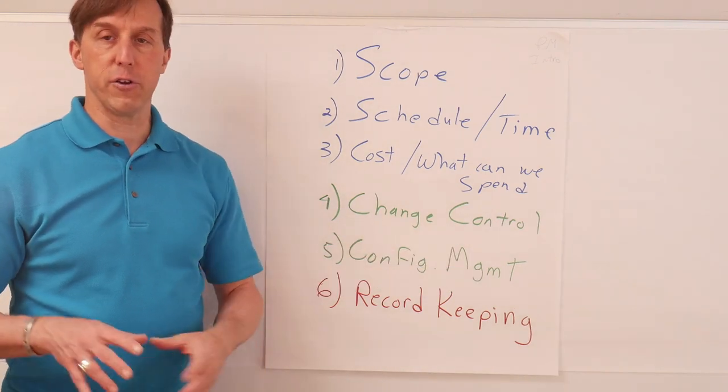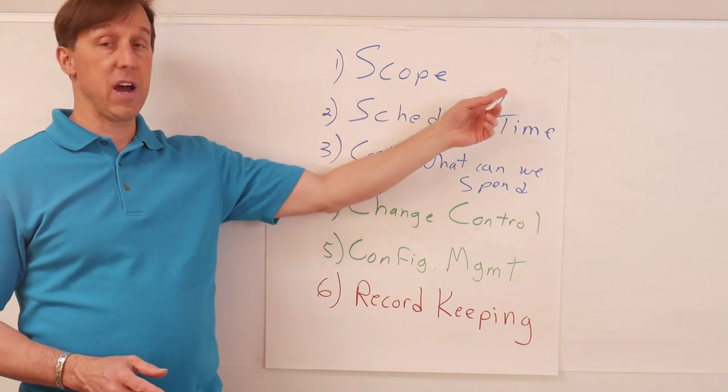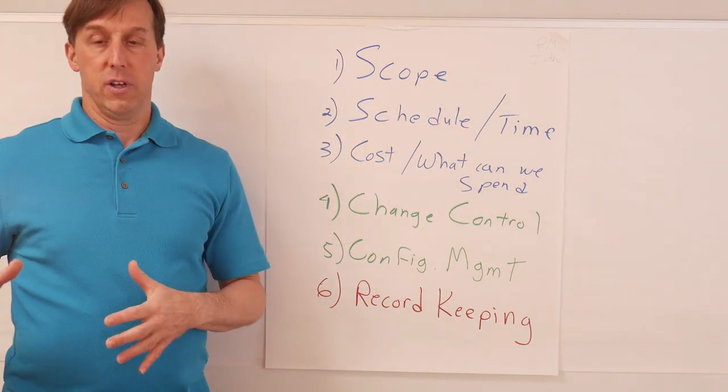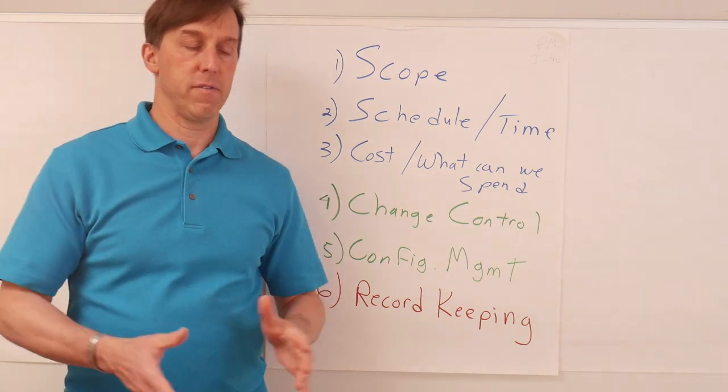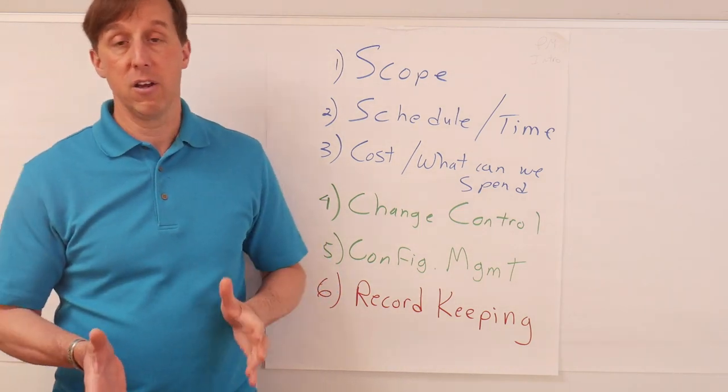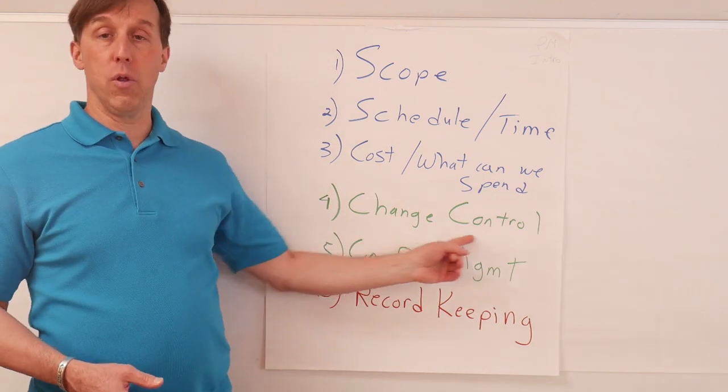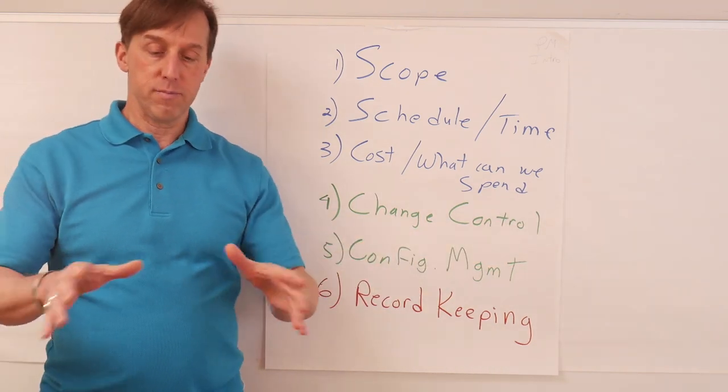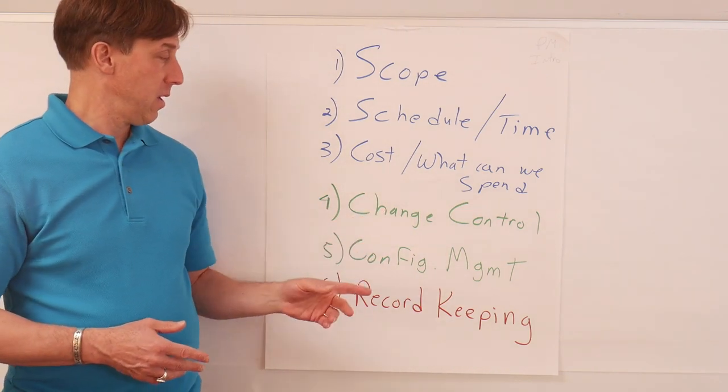Now, change control will allow you to track where is the design. Okay, so scope involves the design. Change control is, all right, we know where to find the latest design. So if, for instance, if we have to build a power supply off of a satellite system, we can go to the latest version, make an estimate of how much power it draws, and then design our supply accordingly.